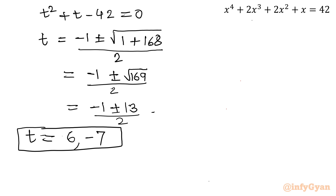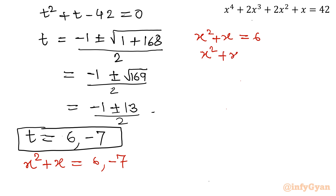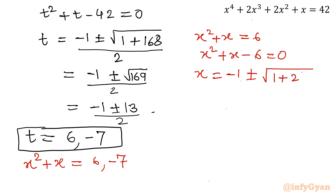Now let us put back the value of t. t was x² + x. So x² + x = 6 or x² + x = −7. I will frame two equations. First: x² + x − 6 = 0. This is again a quadratic equation. Applying the quadratic formula: x = minus 1 plus or minus square root of 1 − 4(1)(−6), over 2, which gives 1 + 24 = 25 under the root.